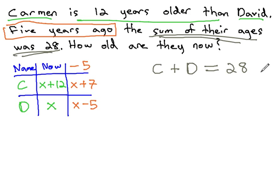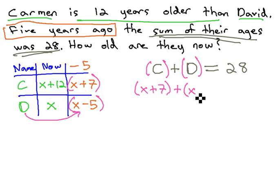Notice I make this equation without worrying about the table or the time change. I simply show that the sum of C and D is 28. Once I have this, I'm now ready to marry the table and the equation, replacing C with the cell that represents C from the past, the x plus 7. We can also replace D with the cell that represents D from the past, the x minus 5. This still equals 28.